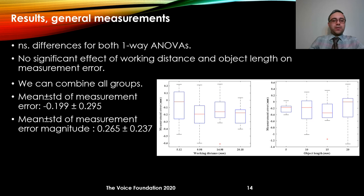Performance of the method for general measurement was evaluated using one-way ANOVA. We created four line segments with lengths of 5, 10, 15, and 20 millimeters, placed them in different spatial locations of the field of view, and varied working distances at 5, 10, 15, and 20 millimeters. Neither the effect of working distance nor the effect of object length on measurement error was significant. Combining all groups, the average value of measurement error was on the order of 0.2 millimeters.